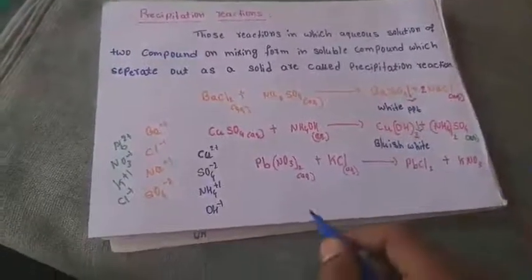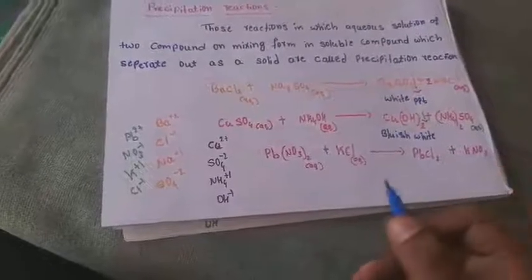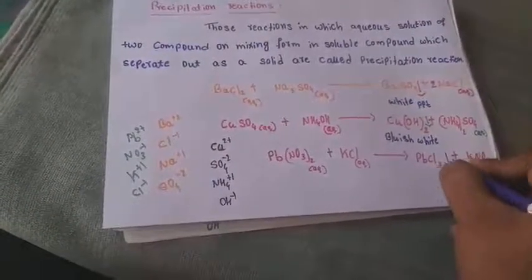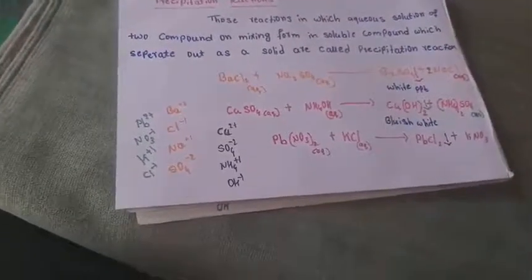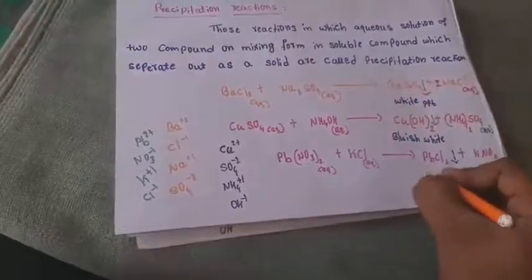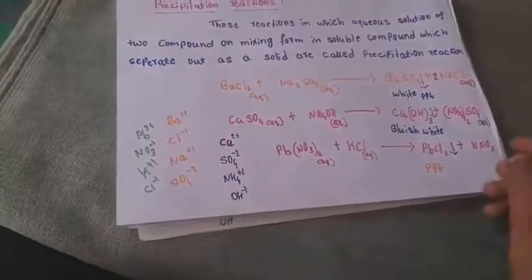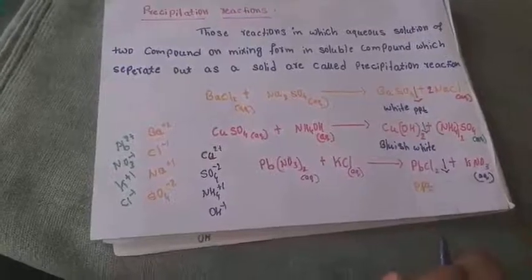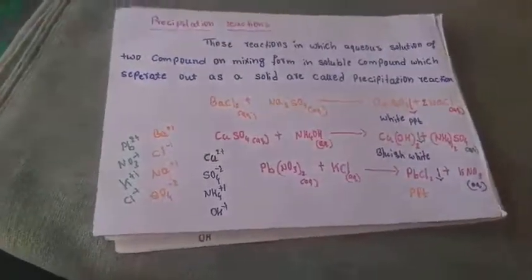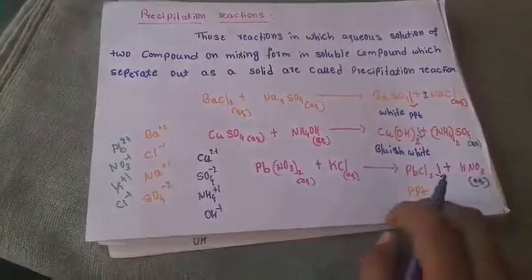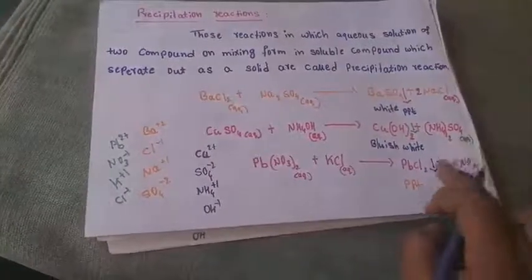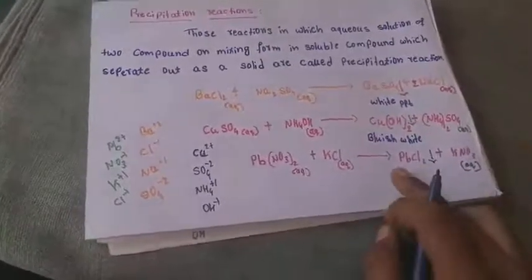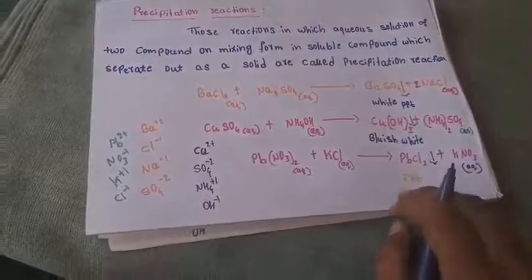By the solubility rules (which will be shared), PbCl₂ is insoluble — on mixing it becomes insoluble and forms the precipitate. KNO₃ is soluble in water and forms an aqueous solution. PbCl₂ forms a white-colored precipitate — that is lead chloride. So when lead nitrate reacts with potassium chloride, two products are formed: lead chloride (insoluble, precipitate) and potassium nitrate (soluble, aqueous). These three are examples of precipitation reactions.